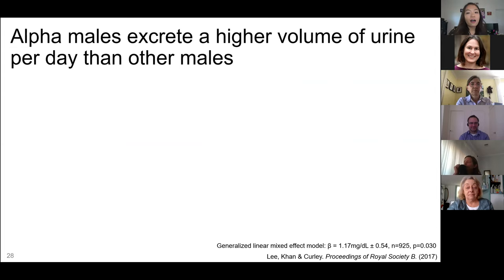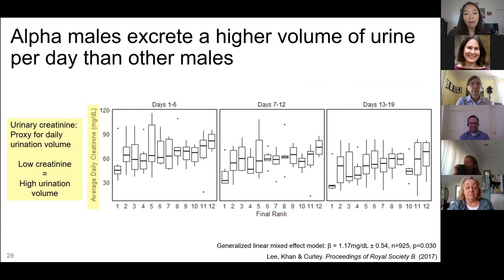We also found that alpha males produce the highest volume of urine per day. We can infer urine volume by looking at creatinine levels — creatinine is a byproduct of muscle metabolism produced at a similar level each day, so lower creatinine indicates higher urine volume. The rank-one mouse across multiple social groups has significantly lower creatinine levels, meaning they produce high urine volume per day. From this we can infer that alpha males are urinating a lot, probably all over the group housing vivarium to send social signals, and the amount they produce increases over the group housing period.